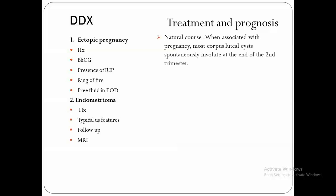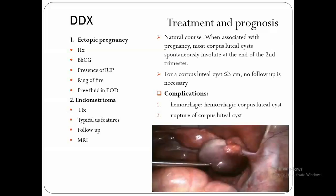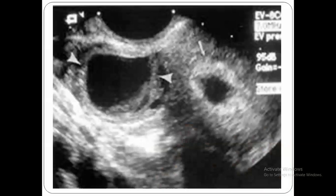Regarding treatment of corpus luteal cysts: the cyst is usually associated with pregnancy and supplies progesterone up to 10 weeks, but usually resolves by the end of the second trimester. Cysts less than 3 centimeters do not necessarily require follow-up. The main complications are hemorrhage and rupture. This laparoscopic view shows a hemorrhagic corpus luteal cyst.